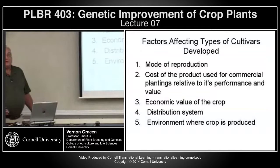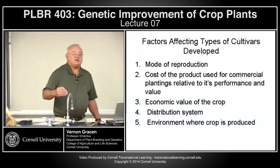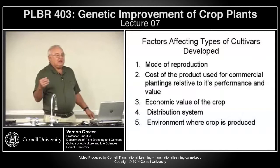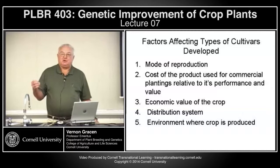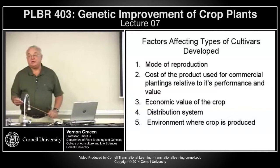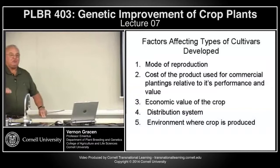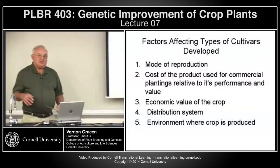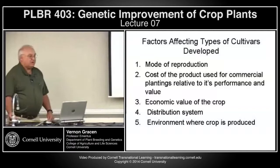The distribution system available also matters. You can imagine that varies tremendously from a country like the United States or most European nations, where we have well-developed private networks to produce and distribute hybrid or variety seeds, versus some developing countries that are in dire need of hybrid seeds to improve performance but lack the infrastructure to produce and distribute that seed reliably to farmers. The environment where crops are produced will also affect what sort of cultivar is developed.